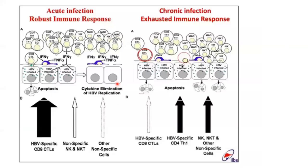Why does the immune pattern differ between acute and chronic disease? In adults, the immune system is very good and CD8 cells are very active, causing apoptosis of hepatitis B virus-infected cells. Whereas in the perinatal and neonatal period, CD8 cells are not very effective. Hence, a non-specific T cell response is mounted — causing some apoptosis, but not completely clearing the virus — leading to chronic hepatitis.